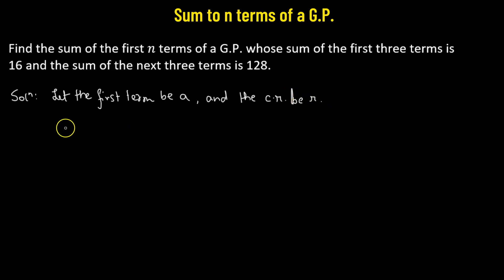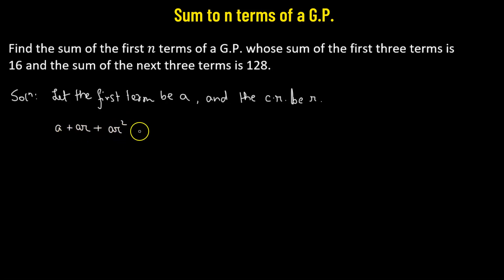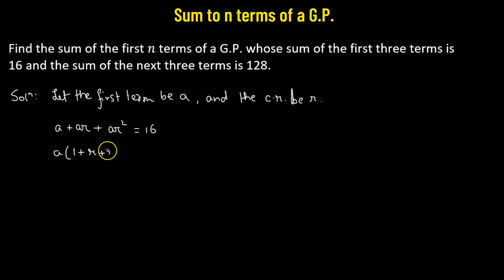The sum of the first three terms: we have first term A, the second term AR, and the third term AR squared. So the sum equals 16. Taking A as the common factor, we have A multiplied by (1 + R + R²) = 16. Let this be equation number 1.